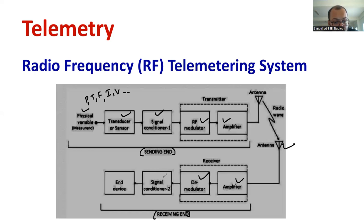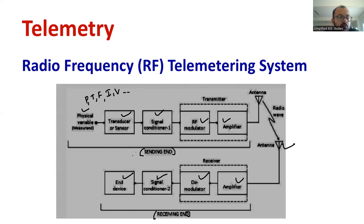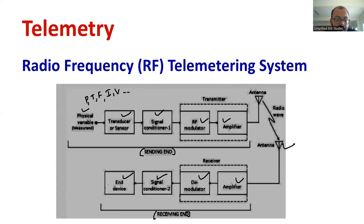We can take back the original signal and it can be moved on to the signal conditioning device — it may be an amplifier or whatever it may be. The ultimate goal is to reach the information to the receiving side, so we use the end device. The original information will reach the end device, which may be a storage device or a display device. The physical variable — whatever quantity you are measuring — will reach the receiving side at the end devices for recording or display. This is called the radio frequency telemetry system, where information is transferred from the sending to the receiving side through radio waves.